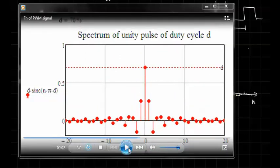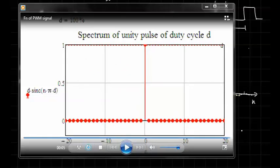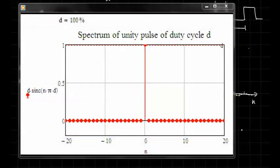Notice, let me stop it here, that when we get up to 100%, the only spectral line we have is the spectral line at n equals 0, because that is the only frequency, e to the j is 0, and it has a magnitude of 1. So at 100% duty cycle, our f of t is just a constant value of 1.